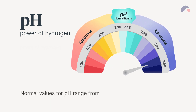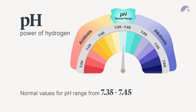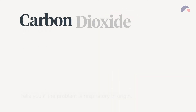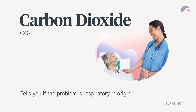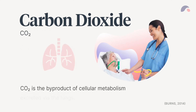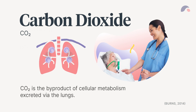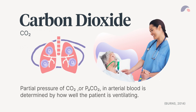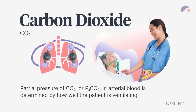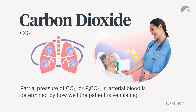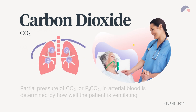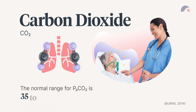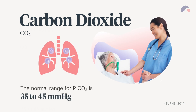Normal values for pH range from 7.35 to 7.45. The next value is carbon dioxide level, and this will tell you if the problem is respiratory in origin. CO2 is the byproduct of cellular metabolism excreted via the lungs. Partial pressure of CO2, or PaCO2, in arterial blood is determined by how well the patient is ventilating. The normal range of partial pressure CO2 is 35 to 45 millimeters of mercury.